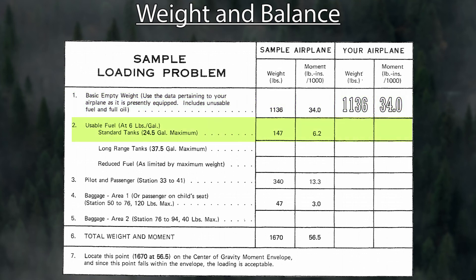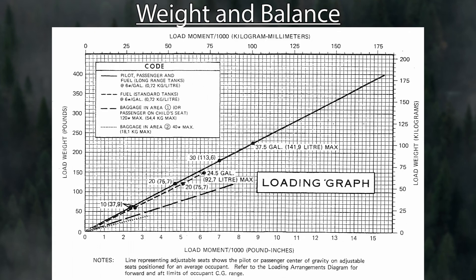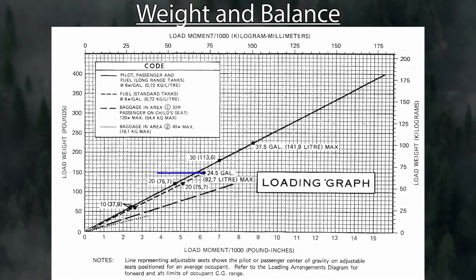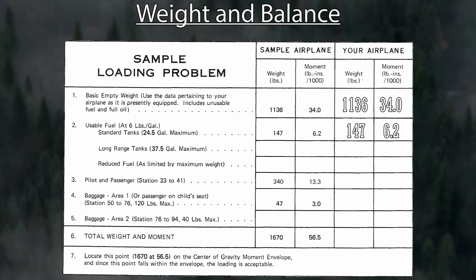Fuel, if you didn't know, is 6 pounds per gallon. Our capacity is 24.5 gallons. Going to the next page, there's a chart — the vertical axis shows load weight in pounds, and the bottom shows load moment divided by 1,000. For fuel, follow the dashed line up to 24.5 gallons. You can see that's about 147 pounds and 6.2 on the moment. So we put in 147 and 6.2.